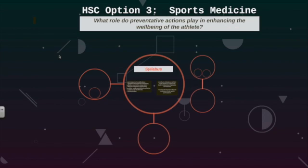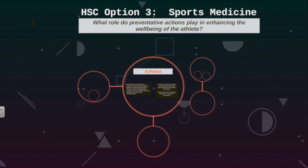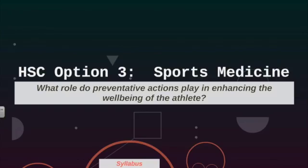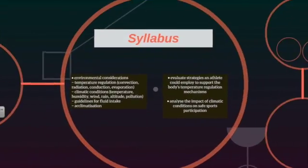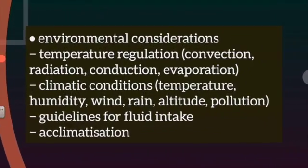This is HSC Option 3 Sports Medicine. The key idea is: what role do preventative actions play in enhancing the well-being of the athlete? The syllabus point we're looking at here is environmental considerations.